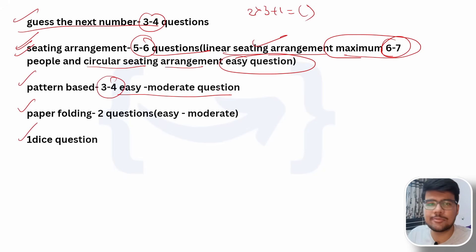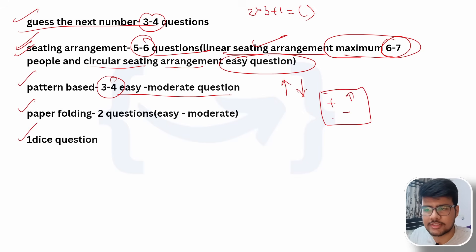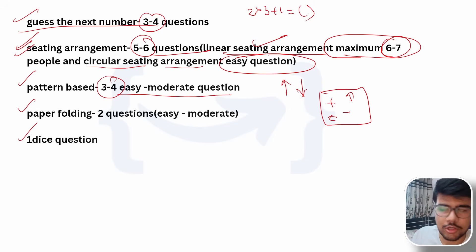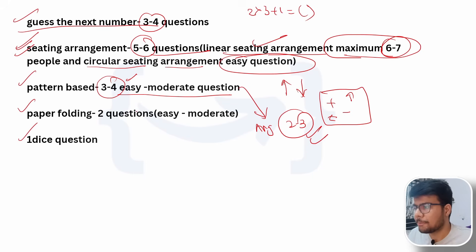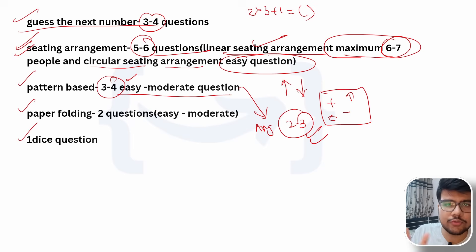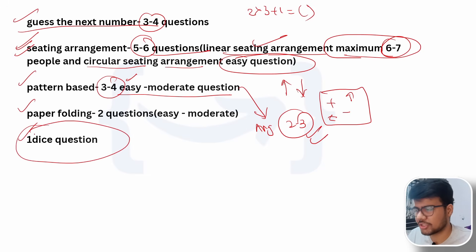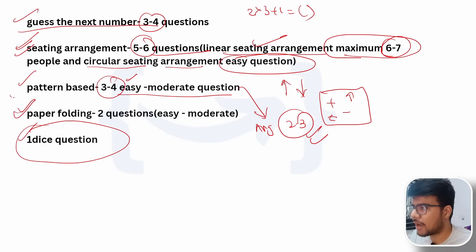Pattern-based questions were three to four easy to moderate difficulty — for example, arrows pointing up or positive/negative symbols in a box. All were totally doable; even an average candidate can solve two to three. Paper folding questions were there — fold the paper from both sides and identify the resulting shape. One dice question was also present. These topics — dice, paper folding, pattern-based problems, seating arrangements, and number sequence — were all covered in our resources.